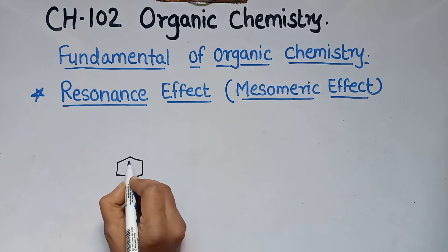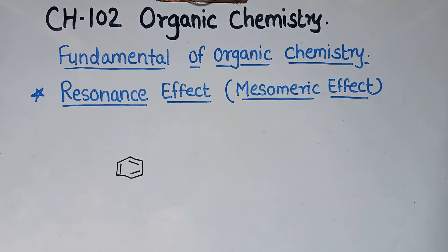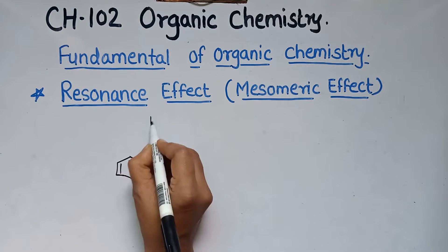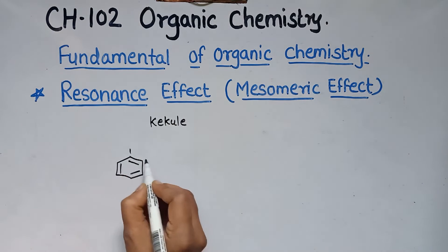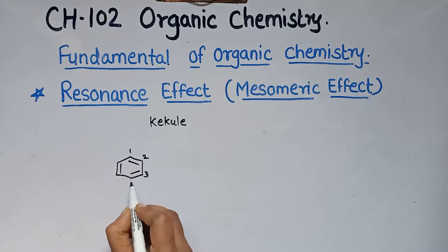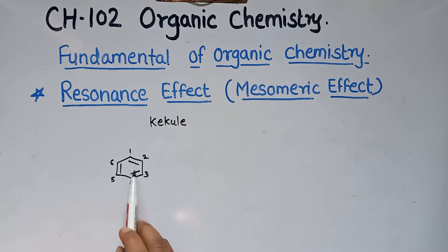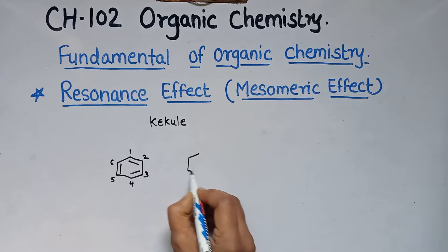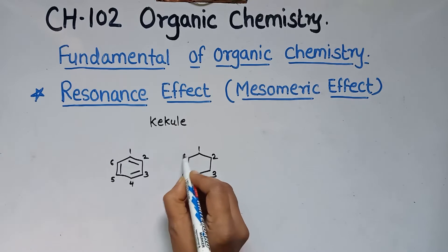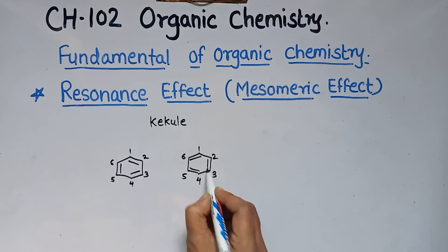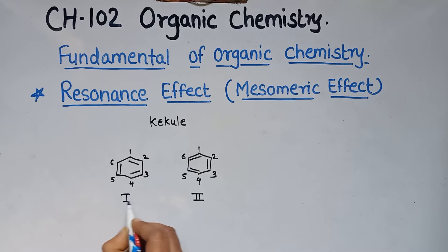Benzene — the scientist Kekulé proposed the structure of benzene. In benzene, there are 6 carbon atoms, and it contains 3 carbon-carbon single bonds and 3 carbon-carbon double bonds. So, Kekulé proposed 2 structures of benzene. The first and second structure differ in the positions of the double bonds.